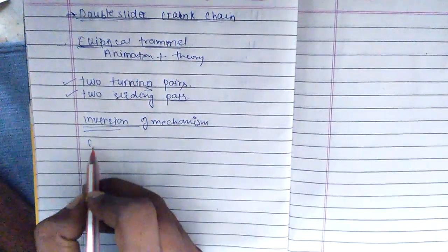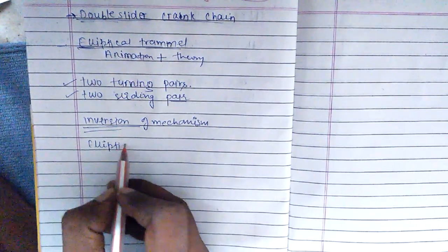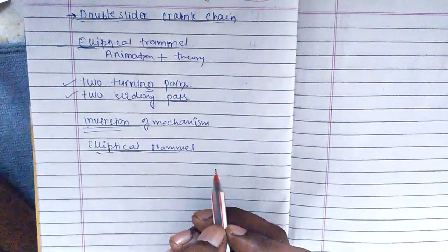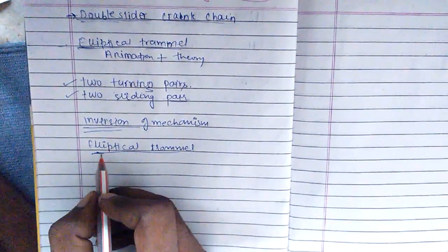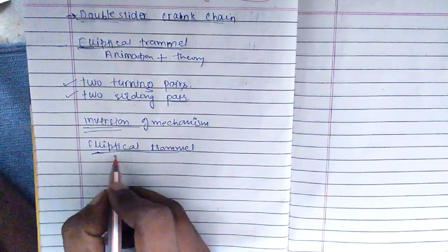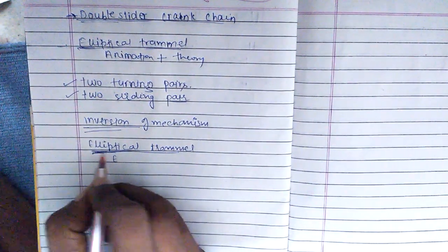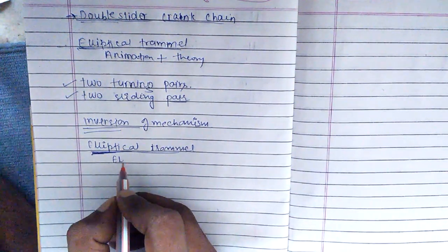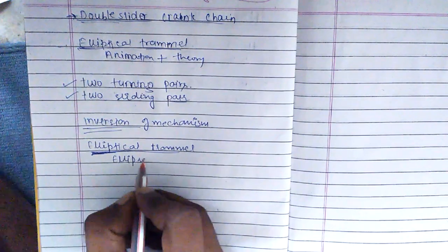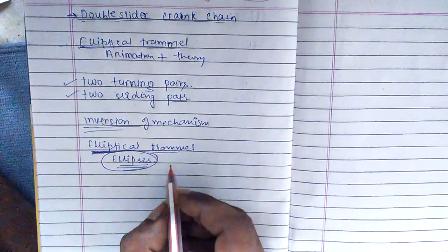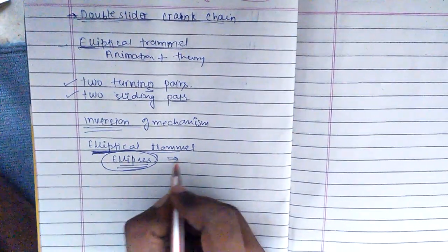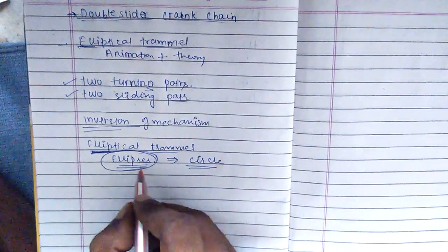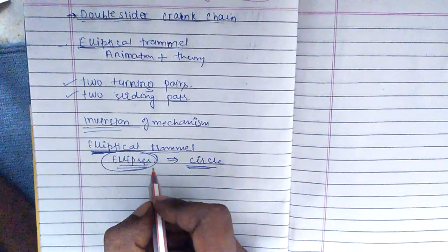So what is an elliptical trammel? We can call it a device which is used to draw ellipses. From the word 'elliptical' we can understand that it forms ellipses. If we make certain considerations, we can also use it for drawing circles, which we will discuss at the end of the video.